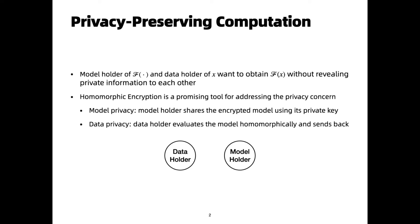Let us consider this general two-party scenario of privacy-preserving computation. A private model F, such as a decision tree, is held by a model holder. She wants to cooperate with a data holder and jointly compute the evaluation of F(x) without revealing the private information of the model and data. Homomorphic encryption is one of the tools to solve this problem. By letting the model holder encrypt the model using her private key, and by letting the data holder evaluate the model homomorphically, finally the model holder can decrypt the response and obtain the evaluation without seeing the data.